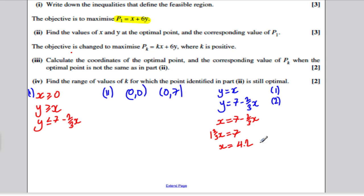So we've got to check these coordinates and substitute them into the objective function P1. At 0,0, P1 is clearly 0, so that's not maximum. For 0,7, P1 is equal to 0 plus 6 times 7, which is 42.